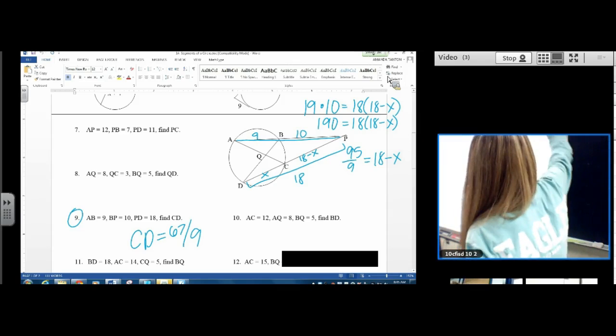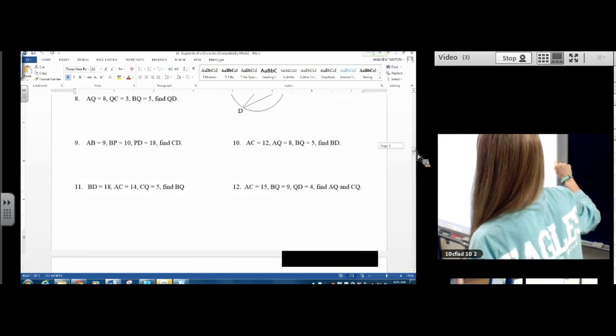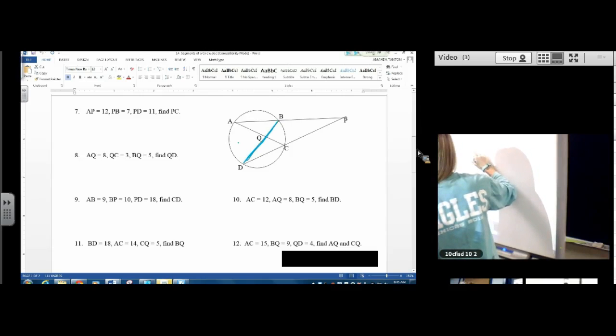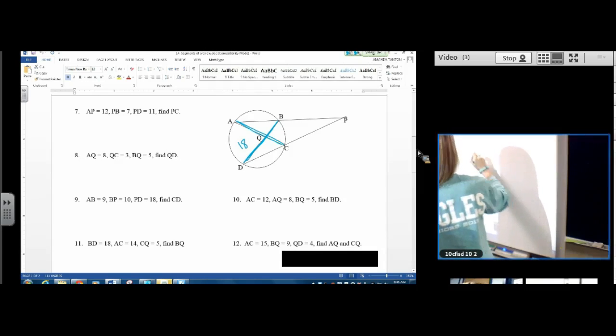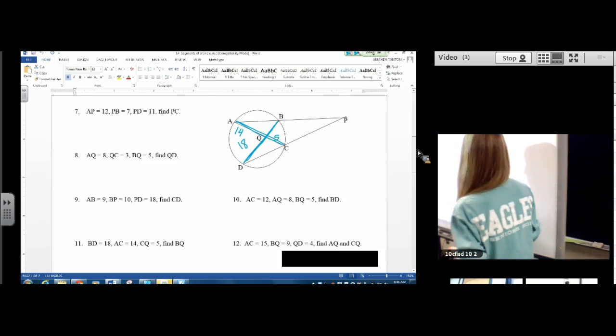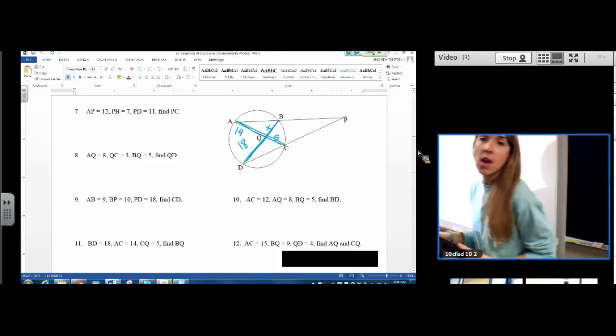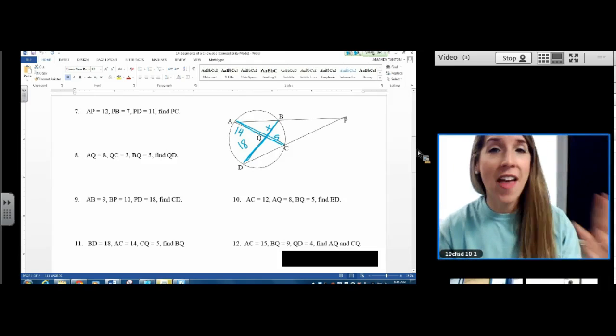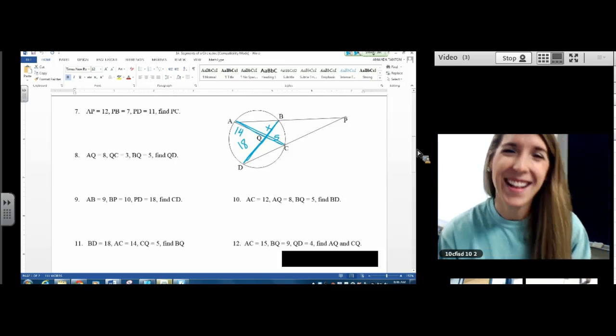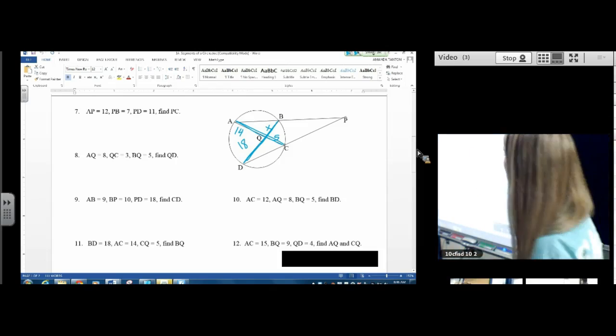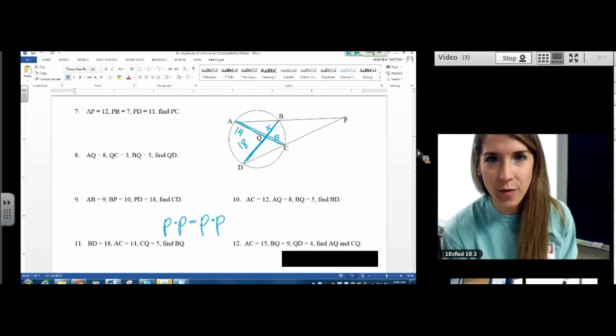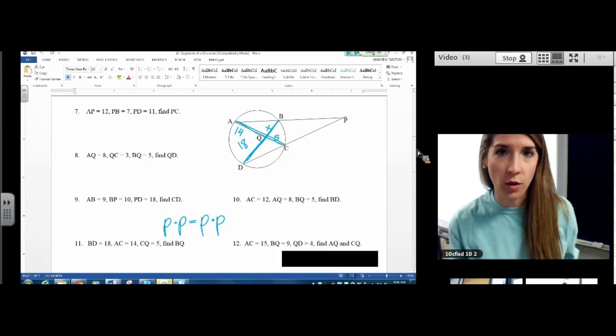Next one, number 11. Same picture. BD is 18, AC is 14, and CQ is 5. Find BQ. Okay, now we're all inside the circle here. Nothing goes outside the circle. So we're not using the wee-wee formula. We're using the pee-pee formula. Sorry for all the kindergarten potty words. But we're using the part times part equals part times part. We want the pieces of the chord. We are not using a whole chord at all. Don't use a whole chord.